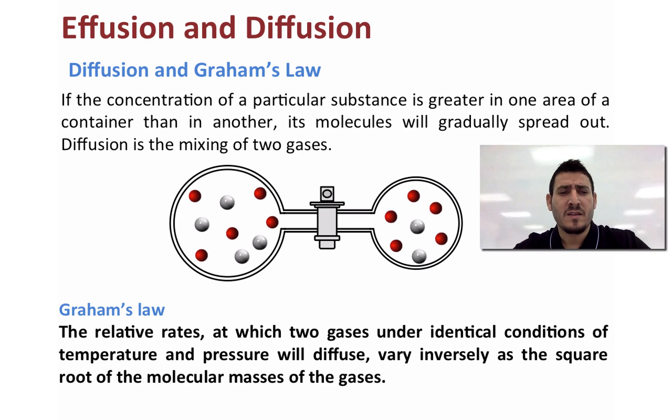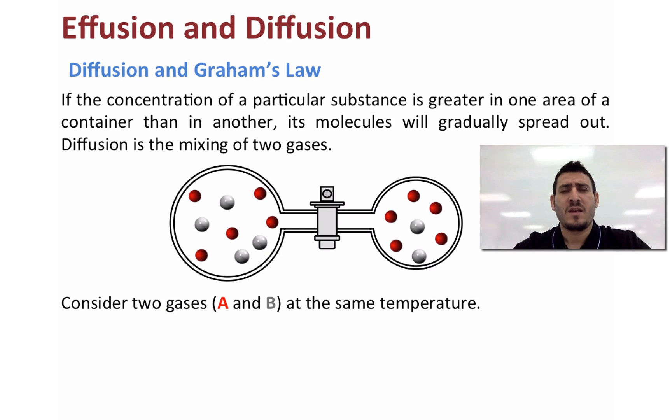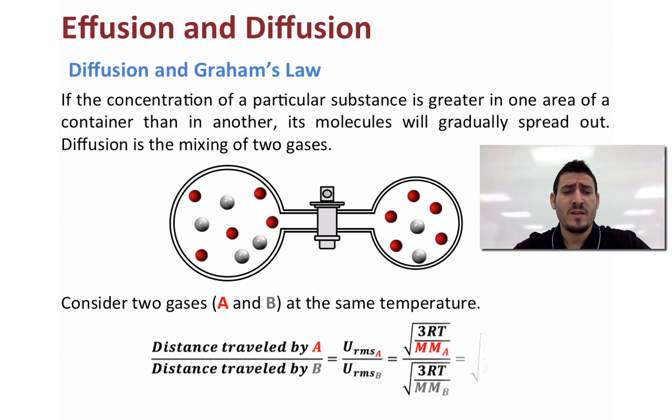So Graham's law states that the relative rates at which two gases under identical conditions of temperature and pressure will diffuse vary inversely as the square root of the molecular masses of the gases. So this means that if we have a gas A and a gas B at the same temperature, the distance traveled by A after diffusion divided by the distance traveled by B is equal to the root mean square velocity of A divided by the root mean square velocity of B.